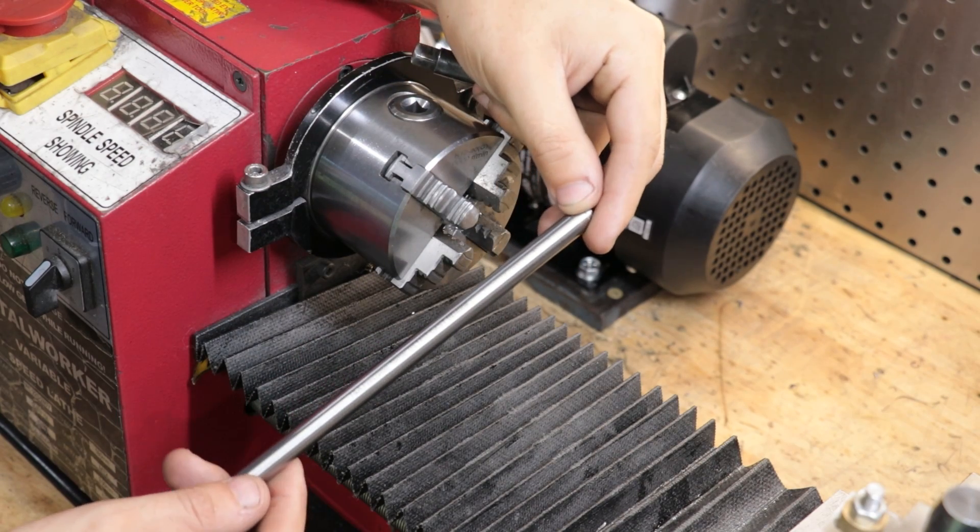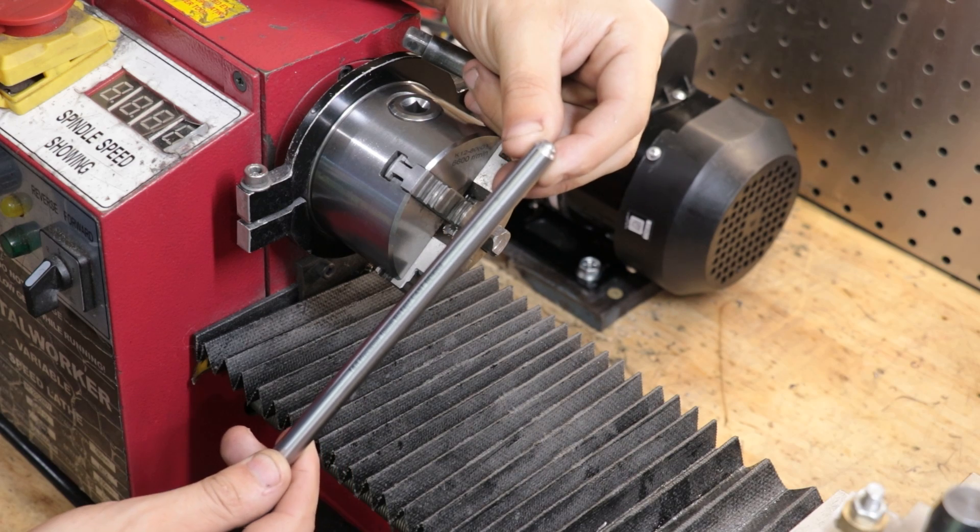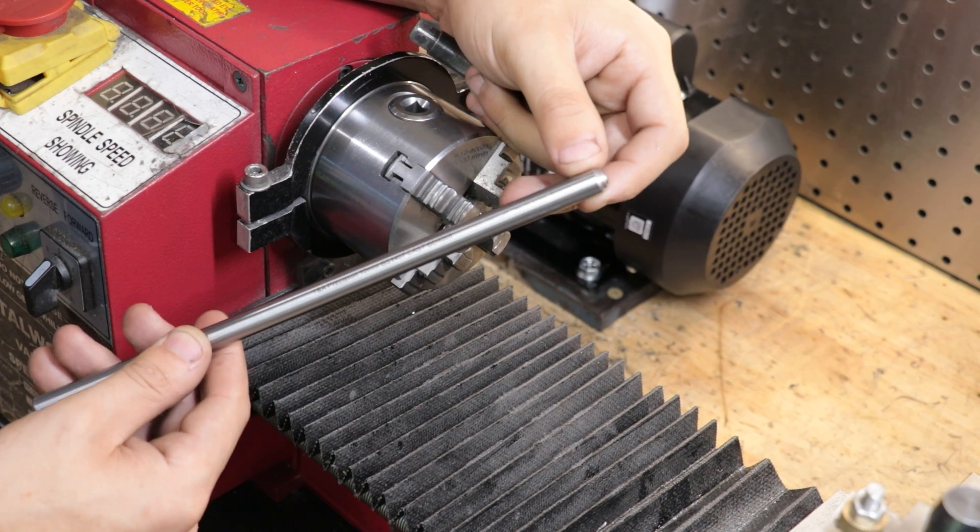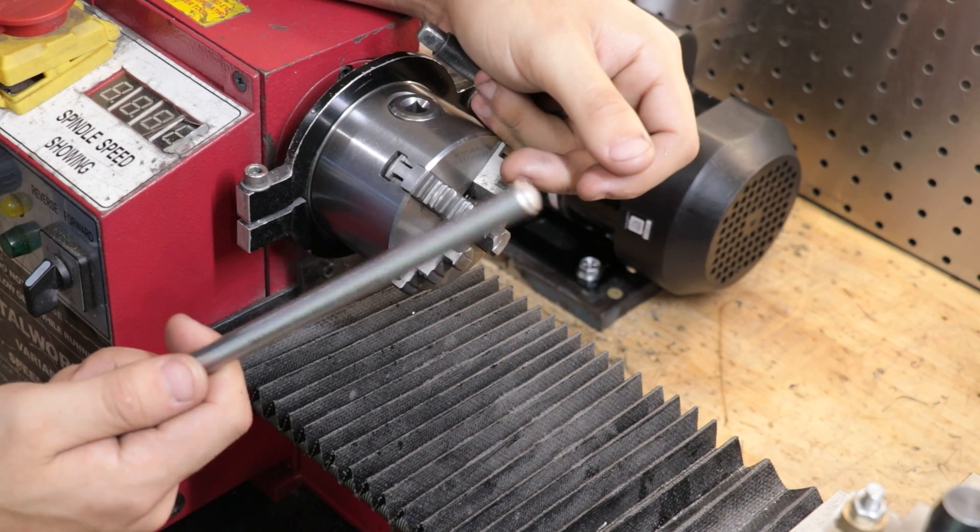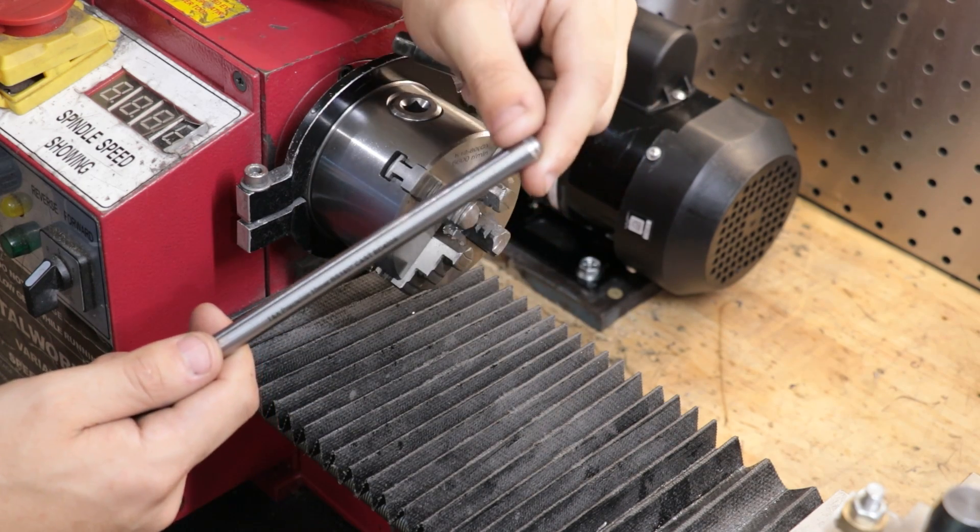I'll start off by making the main shaft and then I think I'll build all of the other parts around it. What I'm going to use is a piece of silver steel. It should be good enough for what I need since I need to heat treat it.